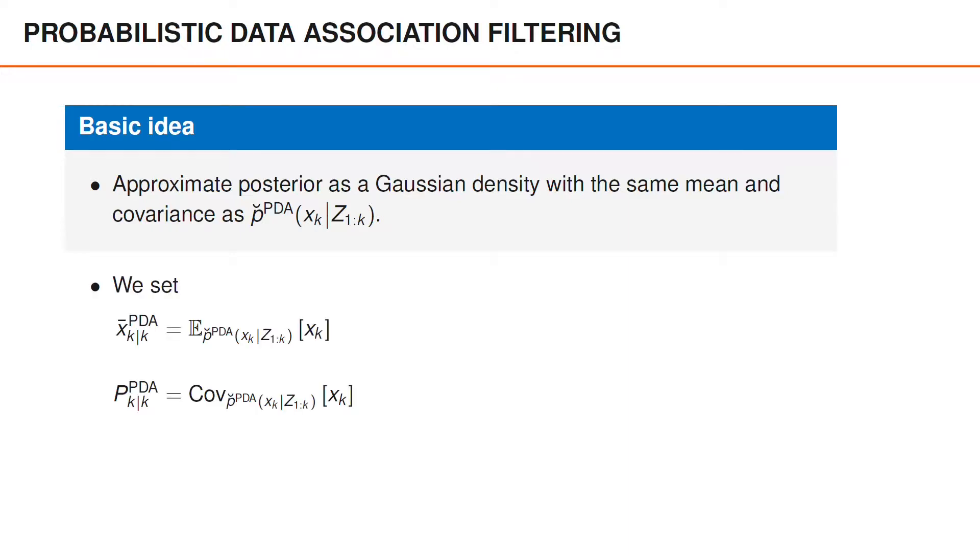In other words, we set the posterior mean x-bar k-k to the expected value of xk, where xk is distributed according to p-breve. Also, the posterior covariance, P-k-k, is the covariance of xk, where xk is distributed according to p-breve.